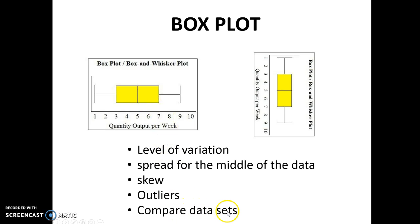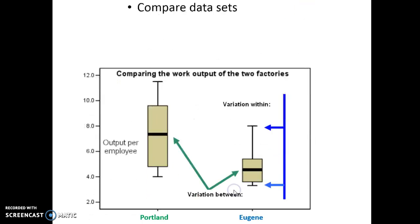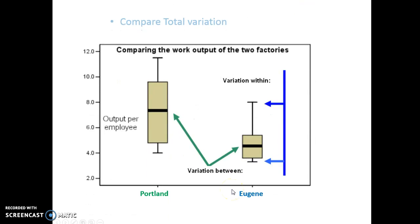You can also use it to compare data sets. So let's look at how that happens. So with comparing, we can compare a couple things. So we can compare total variation. Here we've got work output by factories. Now, if you own a factory, you want your factory output to be pretty consistent.